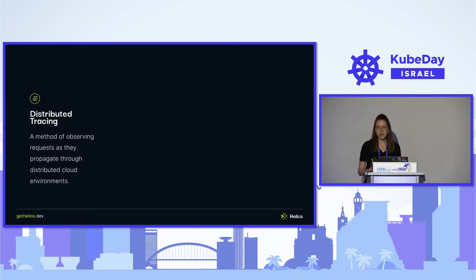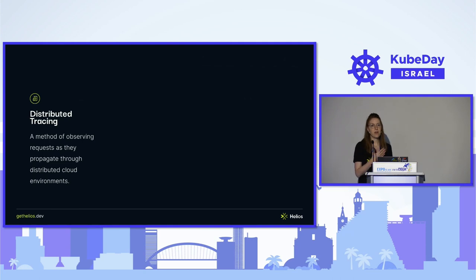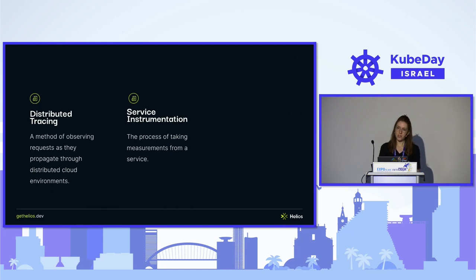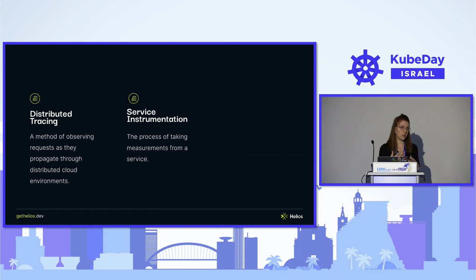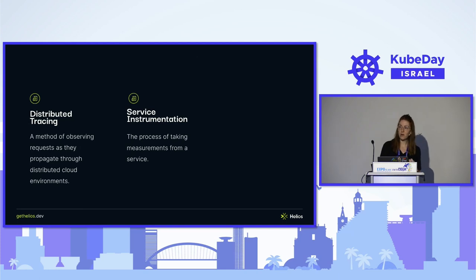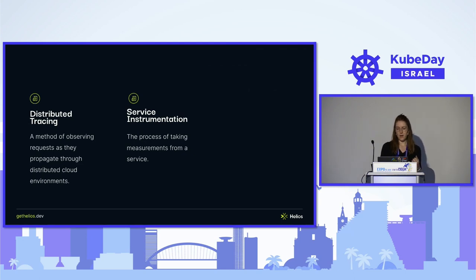Distributed tracing is the ability to track requests and flows through your system and through various components in microservices in the cloud. Service instrumentation is the act of measuring a service and actions within a service. When you instrument a service, an object is created with a unique identifier for each action, containing information about the action — like when it happened, how long it took, and any additional properties you define.